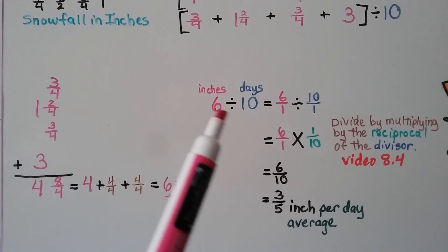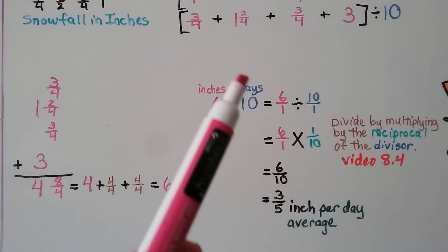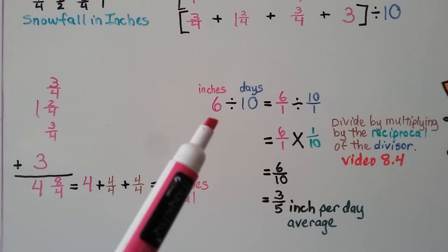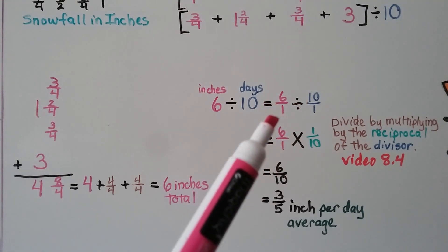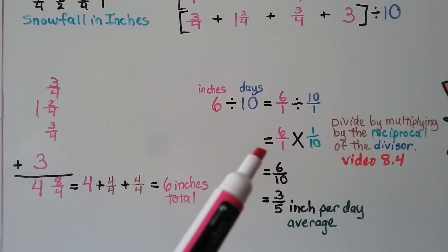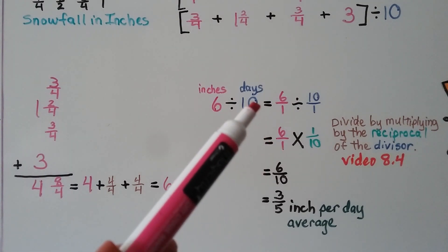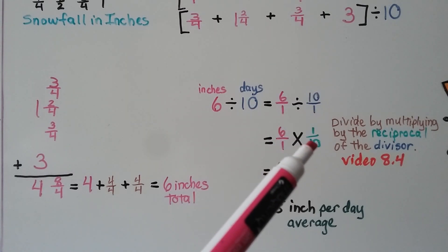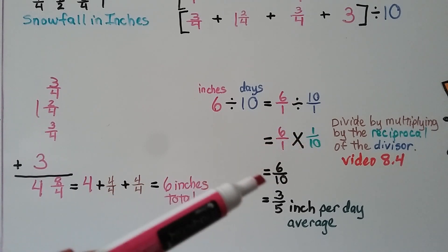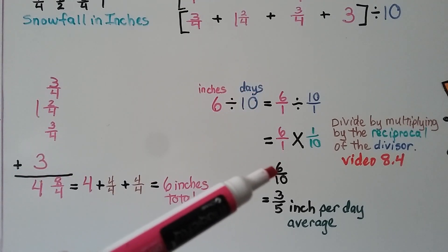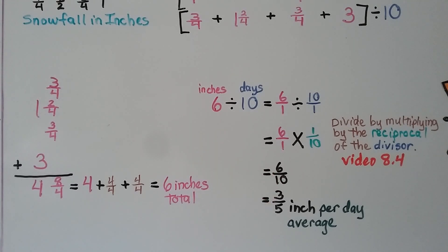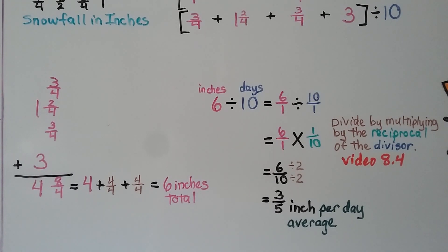It was ten days, so we do six divided by ten. We can write six as six over one and ten as ten over one, then multiply by the reciprocal of the divisor: six over one times one-tenth gives six-tenths. Or we can simply write six divided by ten as six-tenths, which simplifies by dividing numerator and denominator by two to get three-fifths. So three-fifths inch per day is the average snowfall.